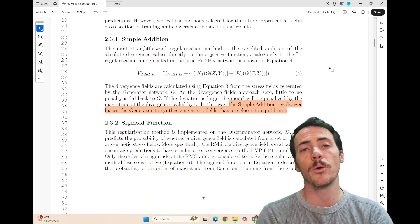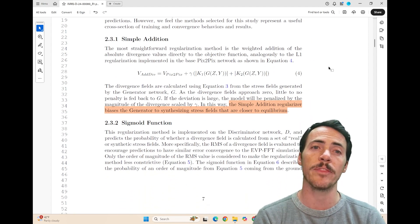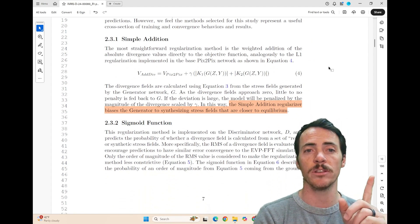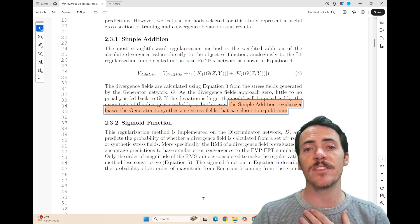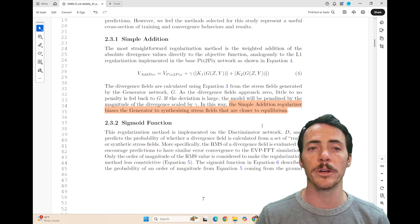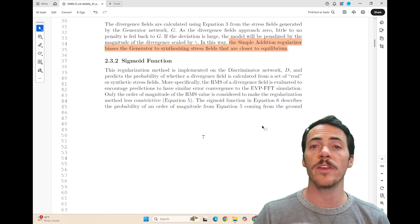And the way that they're going to impose this regularization is through one of three methods. They're going to do either simple addition, the math shown here, and essentially what they're going to do here is it biases the generator to synthesize stress fields that are closer to equilibrium.